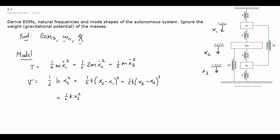Going back up to the 3k spring: its top is attached to x1 and its bottom to x3. Positive x3 puts it in tension when x1 is zero, and negative x1 puts it in tension when x3 is zero. So that term is one-half times 3k times (x3 minus x1) squared. Finally, the 2k spring connects x2 to the floor, giving one-half times 2k times x2 squared.